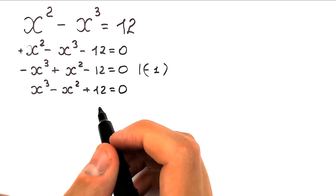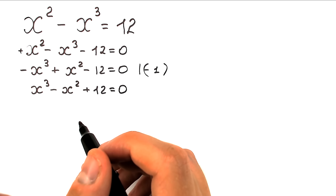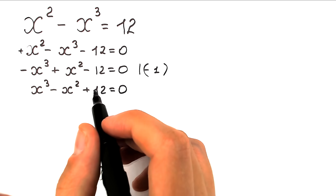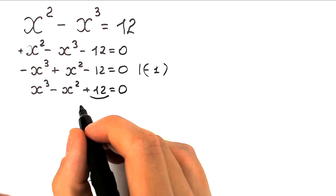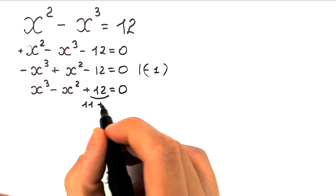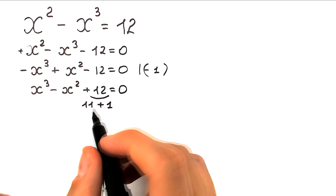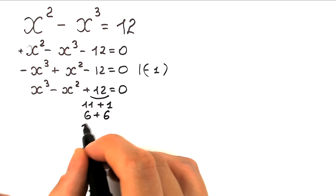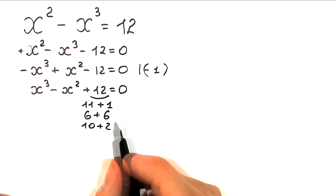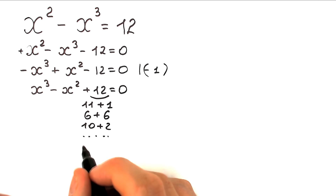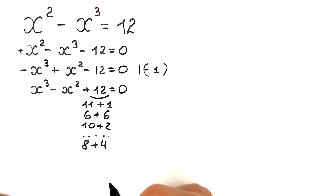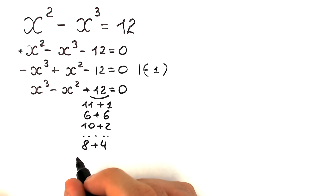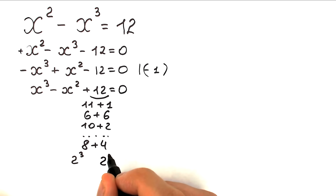What are we going to do next? There are a lot of methods and approaches to solve this cubic equation. I want to show you this approach. First of all, let's think about this 12. How can we express 12? We can write it as 11+1, 6+6, 10+2, and many other ways, but the really important way for us is 8+4. We can write this 12 as 8 plus 4.